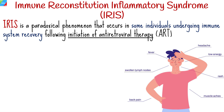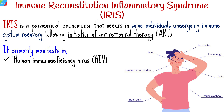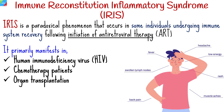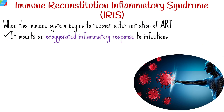Immune reconstitution inflammatory syndrome is a paradoxical and often unpredictable phenomenon that occurs in some individuals undergoing immune system recovery following initiation of antiretroviral therapy or other forms of immune reconstitution. While IRIS primarily manifests in individuals with human immunodeficiency virus infection, it can also occur in patients with other immunocompromising conditions, such as those receiving chemotherapy for cancer or individuals who have undergone organ transplantation.